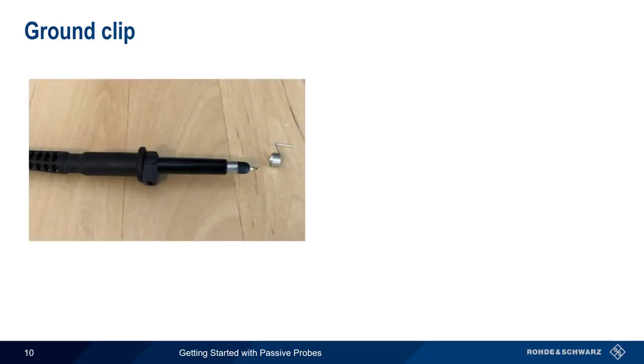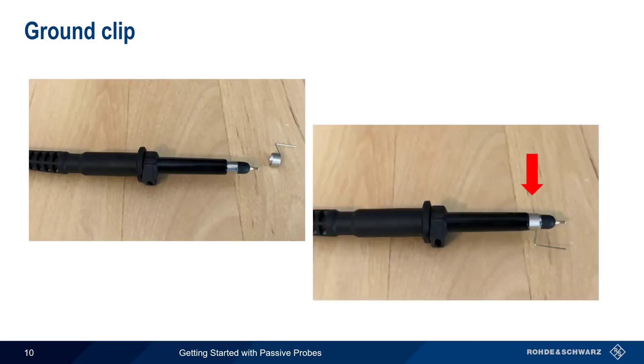The ground clip is also simply pushed onto the end of the probe tip, so that it rests in the metallic ground collar. The ground clip is a convenient way to provide a ground connection to a nearby trace or pin.